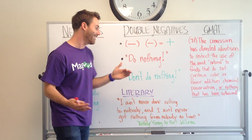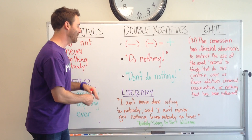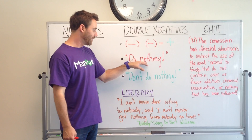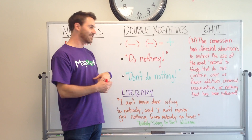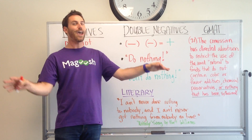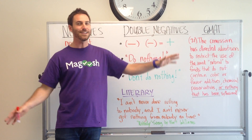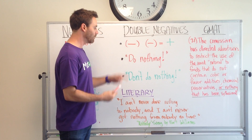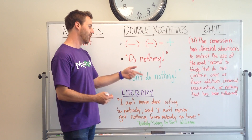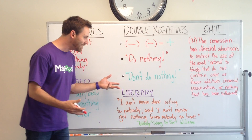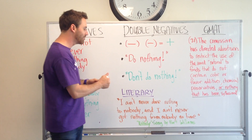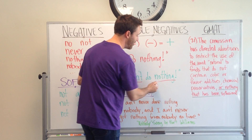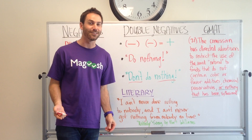For example, a good way to see this: with 'nothing' in the sentence — 'do nothing' — that means don't act, don't do anything, just stay where you are. It's one negative word. But if you have two negative words — 'don't do nothing' — that means do something. You've changed the meaning.